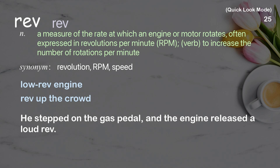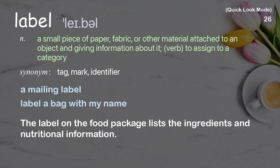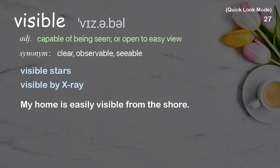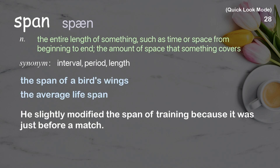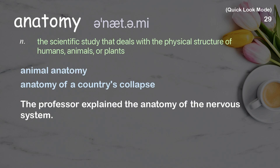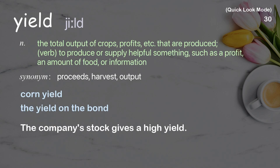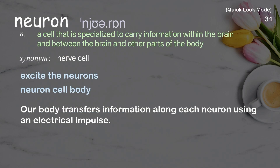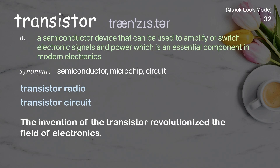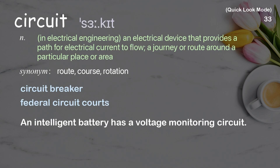Rev. Label. Visible. Span. Anatomy. Yield. Neuron. Transistor. Circuit.